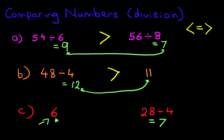So now we are comparing the 6 over here with the 7 over here. Which number is smaller? It is 6. So the arrow is pointing this way. And that is how we compare numbers with division problems. Solve the problem first, and then you will be able to work out which is larger and which is smaller.